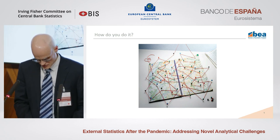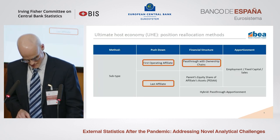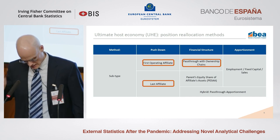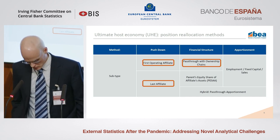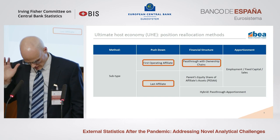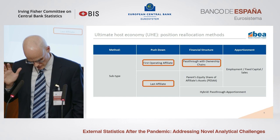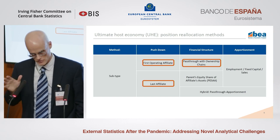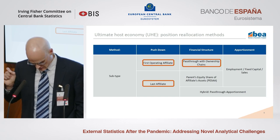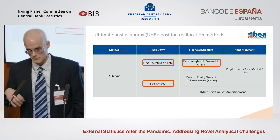While that's all great in theory, actually doing it is a little complicated. This table lays out the six ways of reallocating the position statistics to the ultimate host economy (UHE) that we tested. All six are in the working paper, available online, and we welcome feedback on all six methods. In the interest of time, I'm just going to talk about the three methods we identified as preferred: the two push-down methods (the first operating affiliate method and the last affiliate method) and the pass-through with ownership change method.